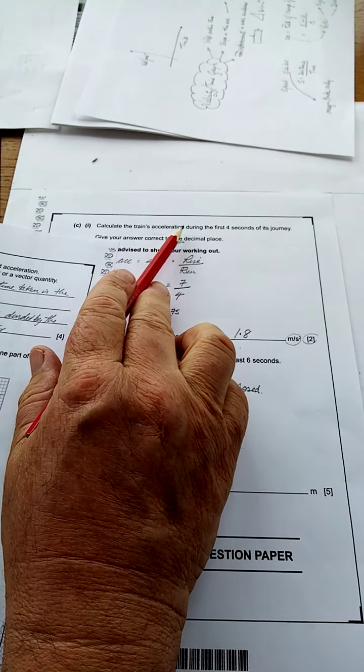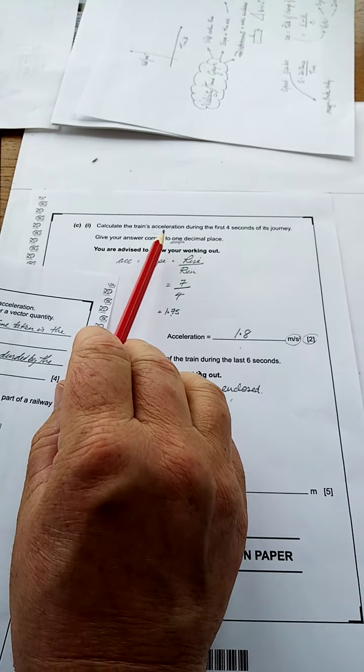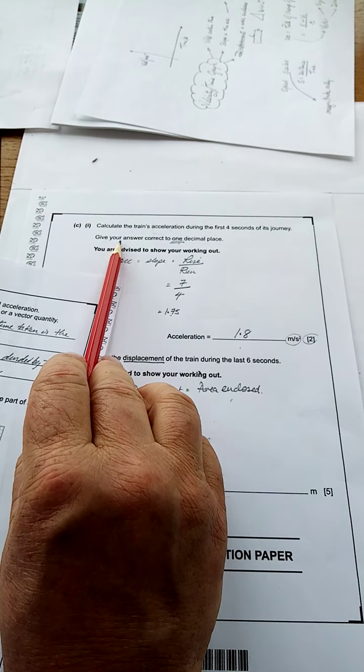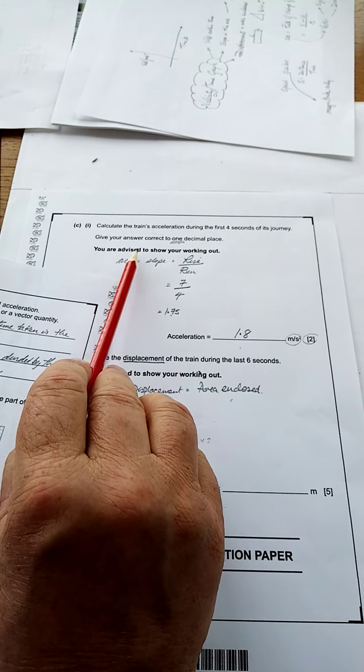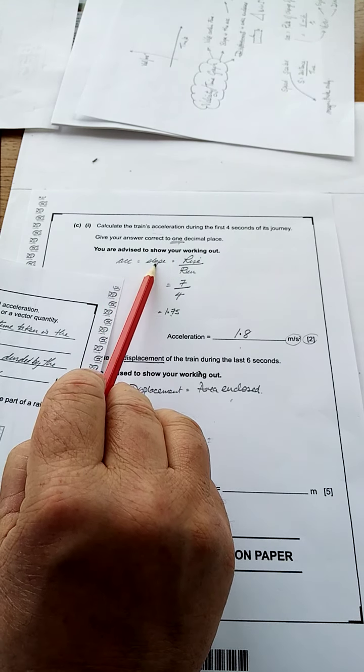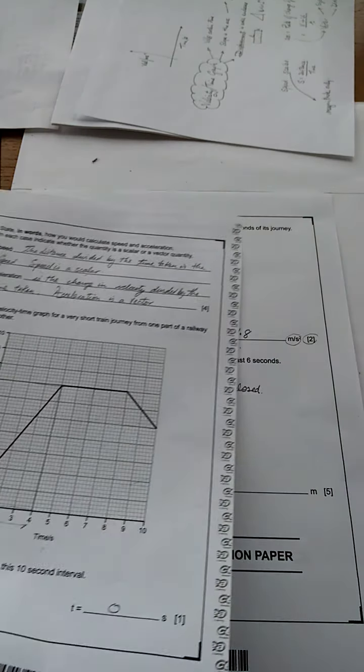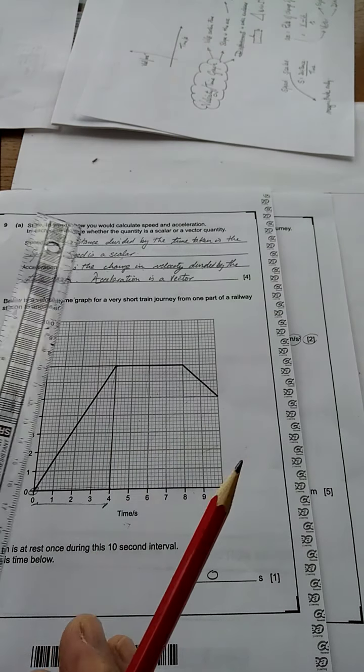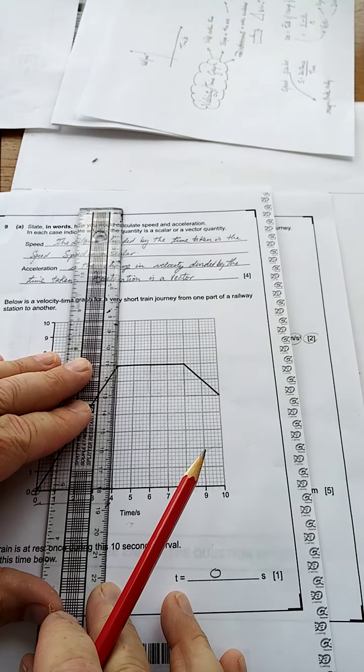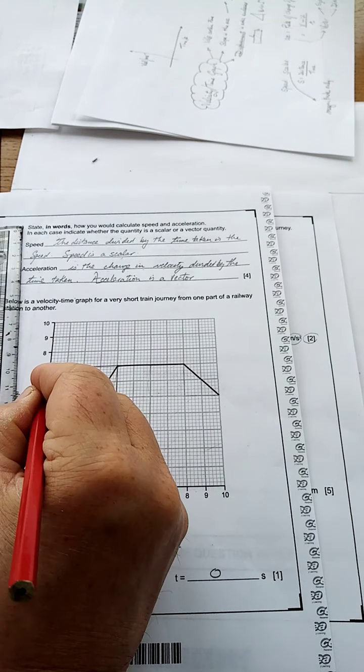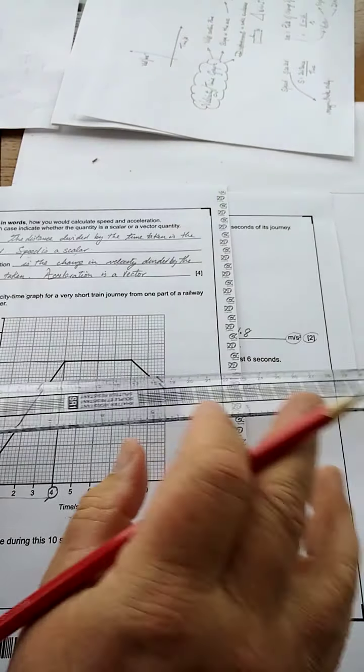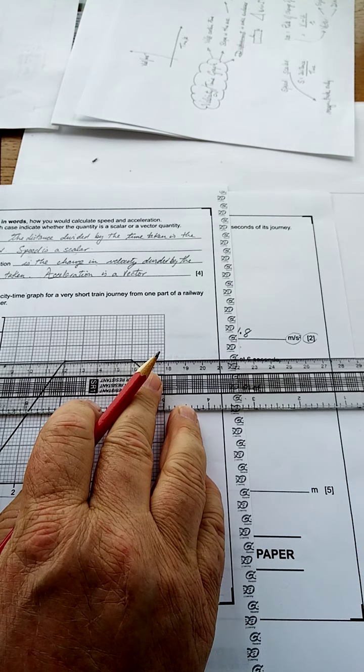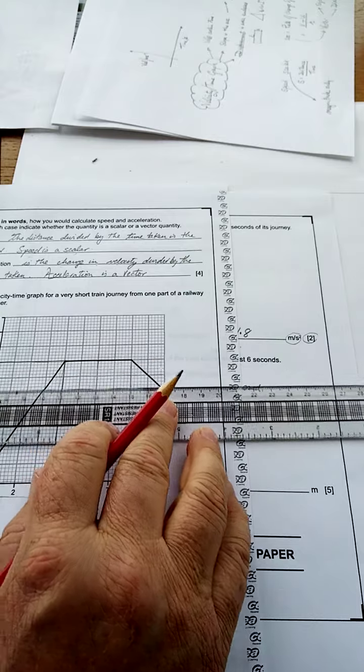Calculate the train's acceleration during the first four seconds of its journey. One decimal place. Give your answer correct to one decimal place. You're advised to show you're working out. Acceleration slope is rise over run. Now. Look. Take your time. That's four seconds. That's seven meters per second. Be careful. Use the ruler. Look. Take your time.